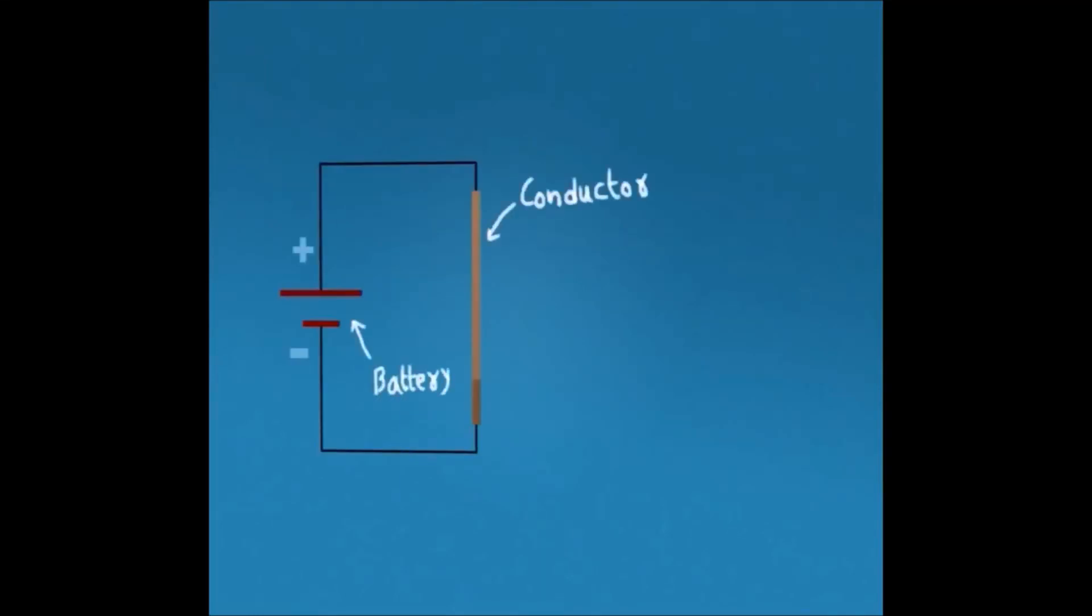Working of a transformer can be understood by taking a simple example of a small piece of wire carrying current when it is connected to a battery.